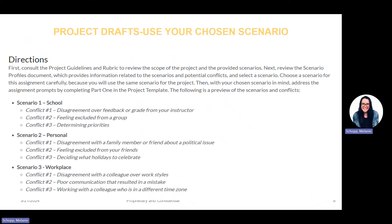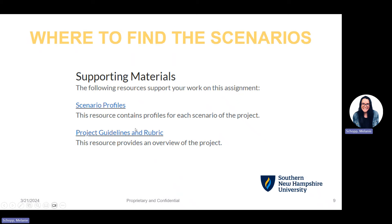For the final project draft, you will center in on the scenario you chose — school, personal, or workplace. Within the scenario profiles, there are specific conflicts listed under each scenario. For example, under the school scenario, conflict one is a disagreement over feedback or a grade from an instructor, conflict two is feeling excluded from a group, and conflict three is determining priorities. You pick one of those conflicts in addition to your scenario overview to answer the module five questions.